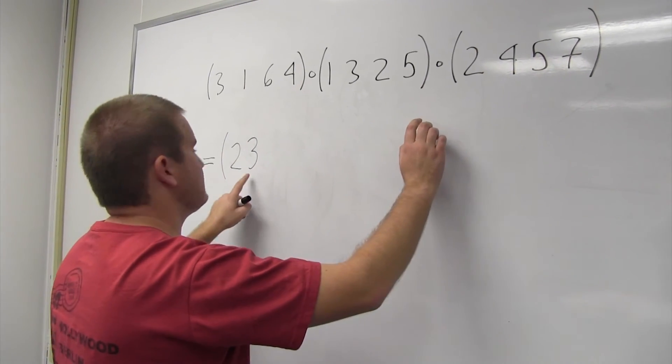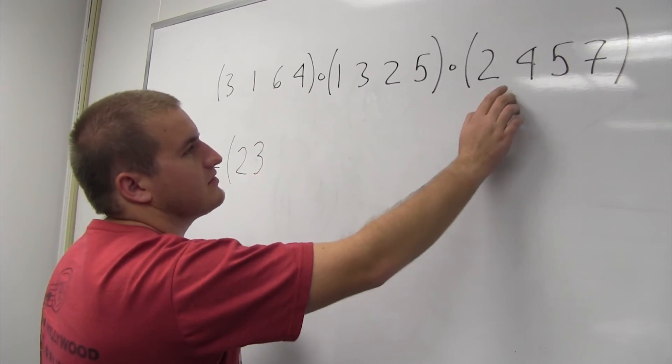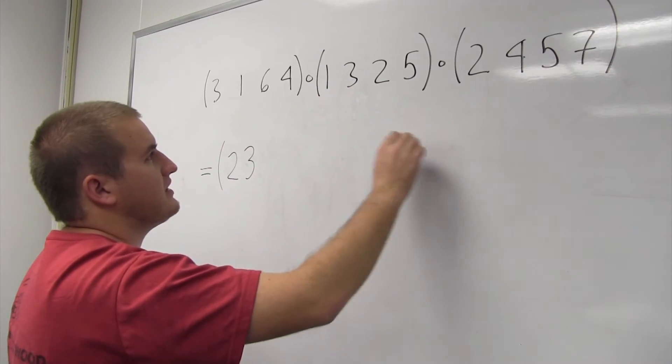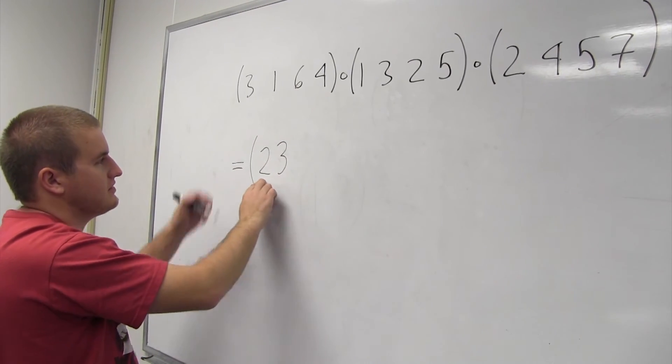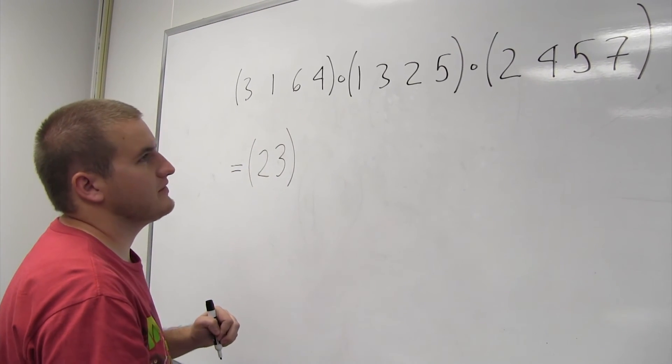The next one we want to look at is 3, because it's right here. So 3 stays fixed here, and then the 3 goes to 2 here, and then it's fixed here. So 3 ends up going to 2. So this is one part of it.